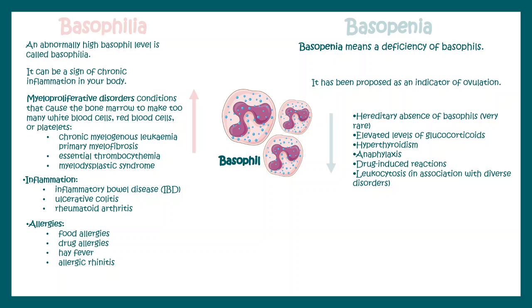An increase in basophil number is known as basophilia, whereas a decrease in number is known as basopenia. Basophilia is an abnormally high level of basophils in the blood, and it could be associated with several pathological situations such as myeloproliferative diseases like CML, myelodysplastic syndromes, inflammation-related conditions like IBD and ulcerative colitis, and many allergies. Basophil numbers must be correlated with the clinical situation.